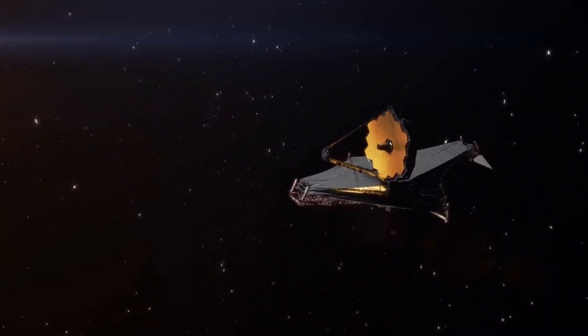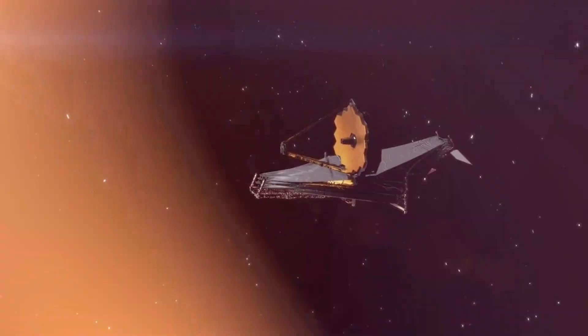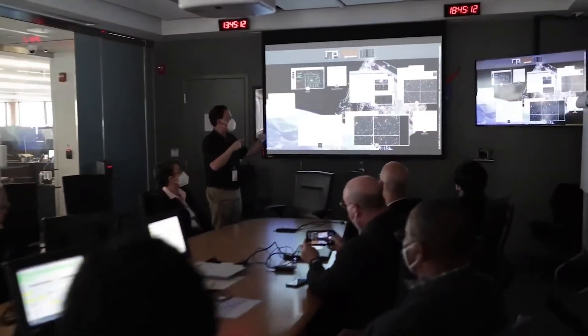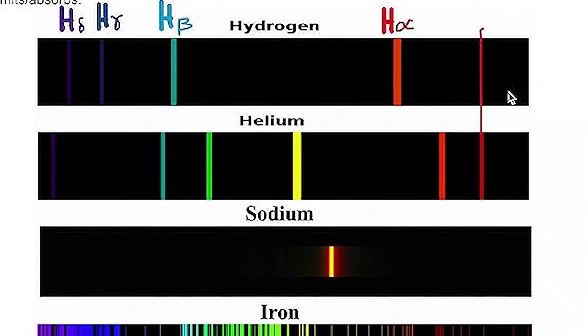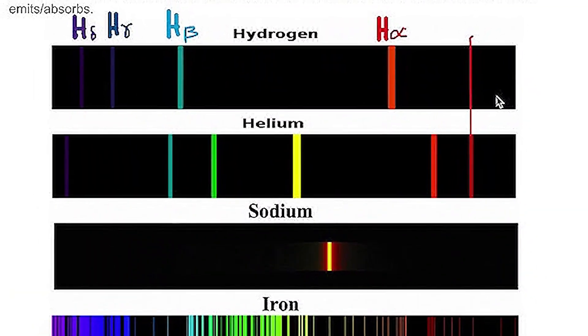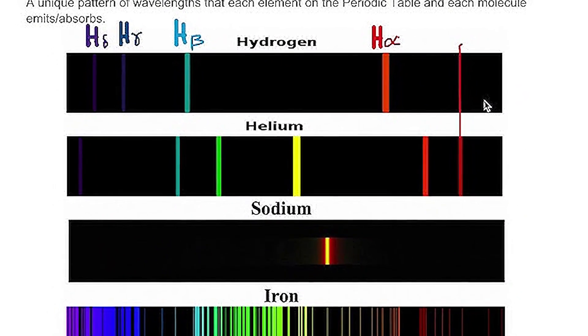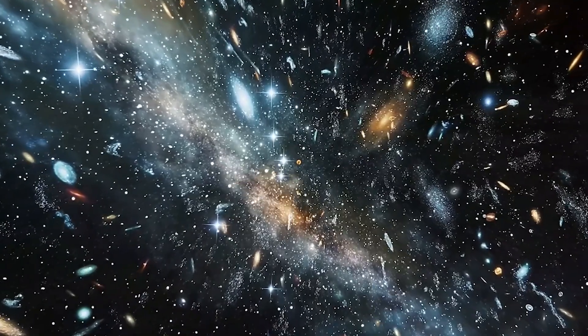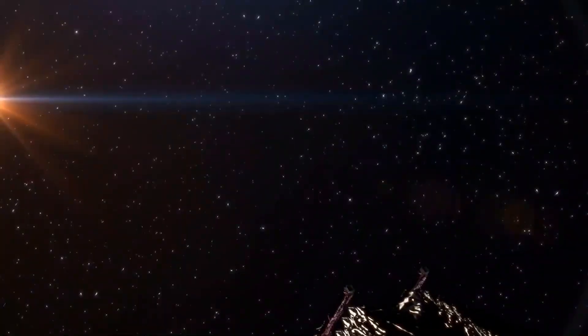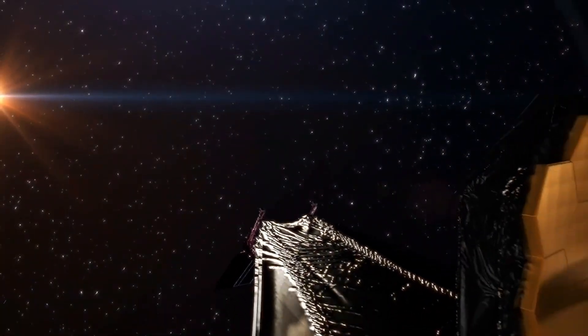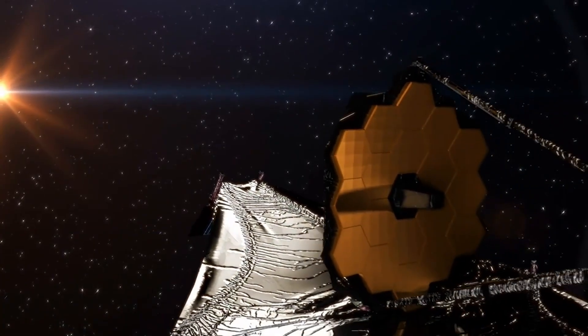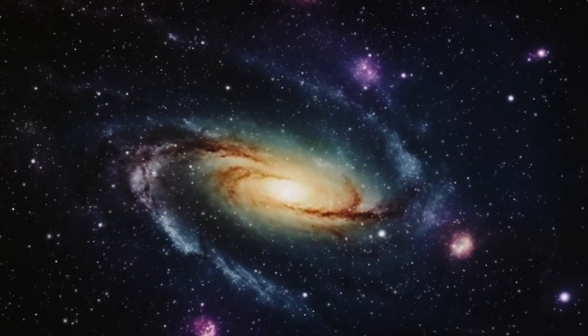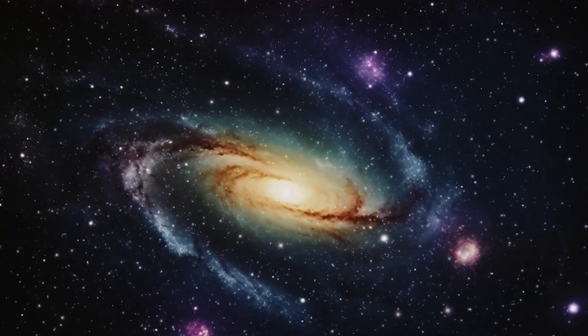When Webb's instruments captured the light from these galaxies, astronomers noticed something even more curious. Their chemical fingerprints showed elements heavier than helium: oxygen, carbon, even iron. These elements require multiple generations of stars to create. That means by the time Webb saw them, these galaxies had already lived through several stellar lifetimes. That shouldn't be possible only a few hundred million years after the supposed beginning.